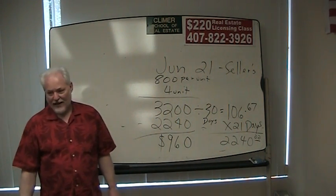We prorated taxes, we prorated rent. Now I don't think you'll see prorated interest on the exam, but just in case you do, I'm going to show you how to do it. This is with an assumed mortgage. Let's say we're going to close on June 21st, and Mr. Buyer is going to assume the mortgage of Mr. Seller. Mr. Seller owes $45,000 on his mortgage at 11%.